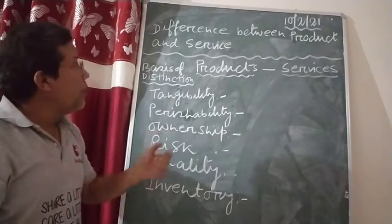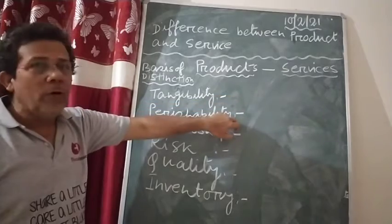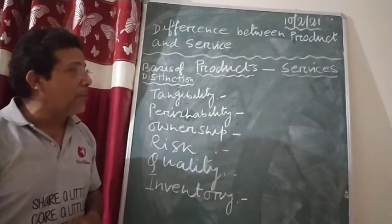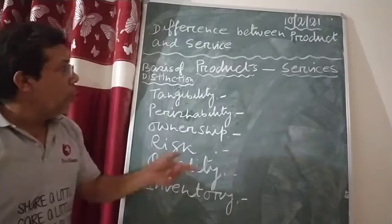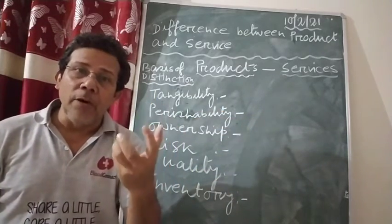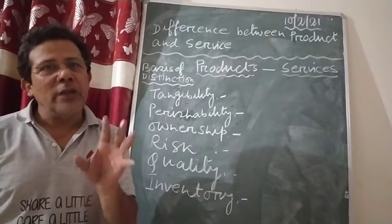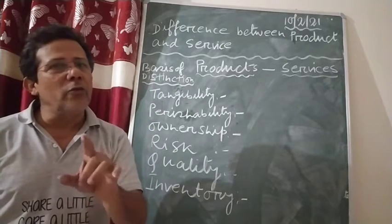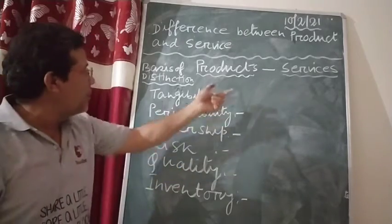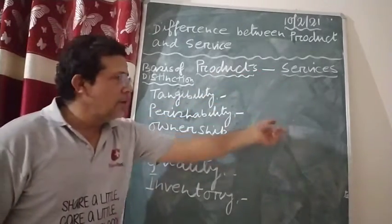Point number two is perishability. Products are durable — that means you can keep a product for a long period of time. On the other hand, services are perishable — meaning once you deliver the service, you cannot keep it for a long period of time. So you write: product is durable, service is perishable.